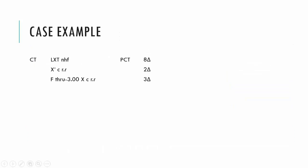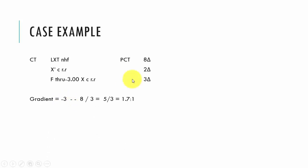Looking at a case example: a patient has a left exotropia of eight diopters in the distance, an exophoria of two diopters at near, and an exophoria of three diopters at far through minus three lenses. To measure the ACA using the gradient method, we take the measurement with the lenses on at far and compare it to the PCT result at that same distance, which is eight. Putting that into the formula: we have minus three (the PCT with minus three lenses), minus minus eight (plus eight, the deviation at far), divided by three (the lens used). That gives us five over three, which is a 1.7 to 1 ratio.